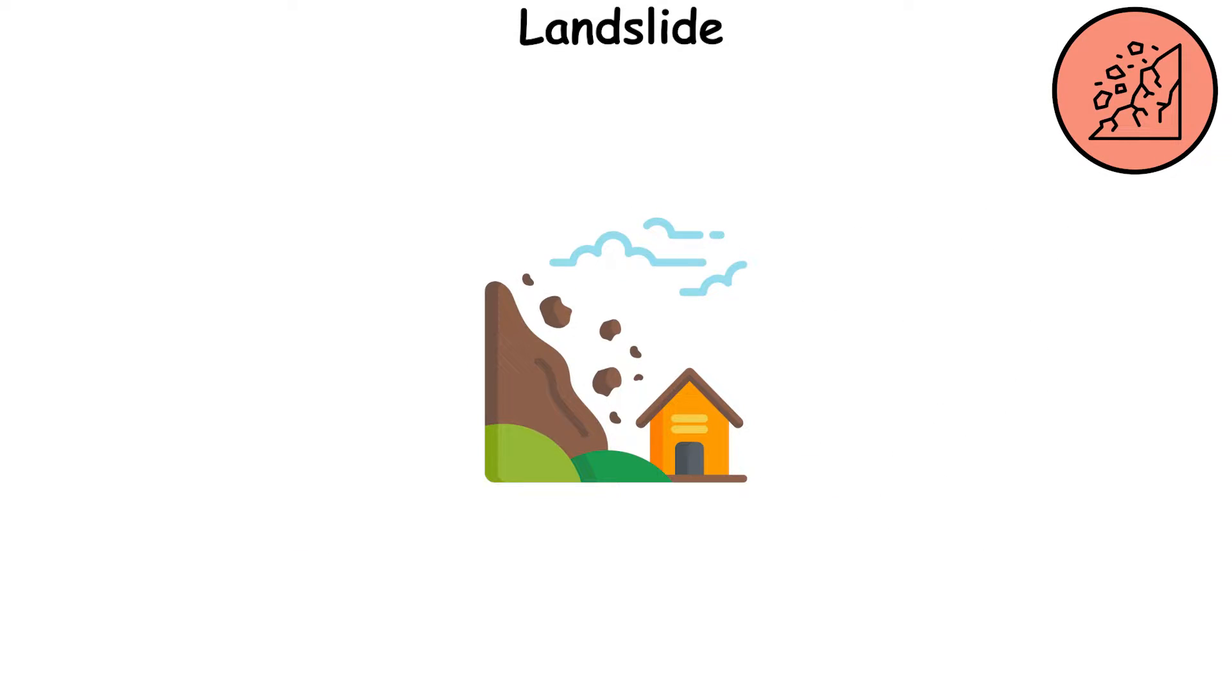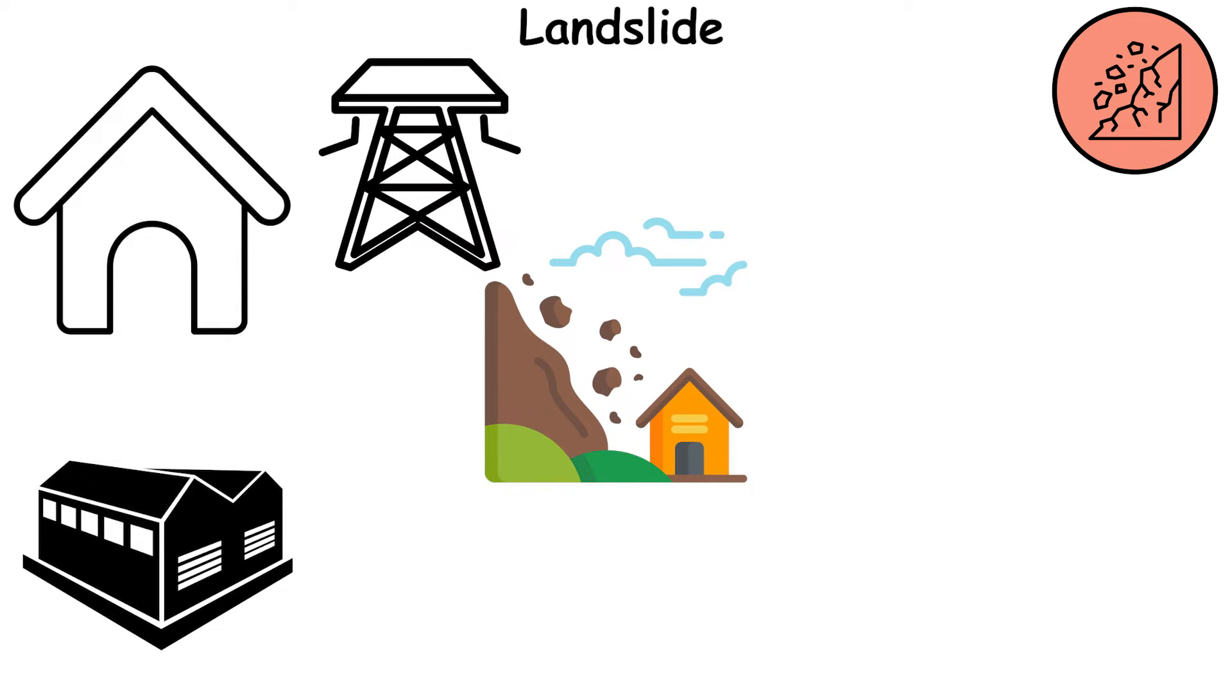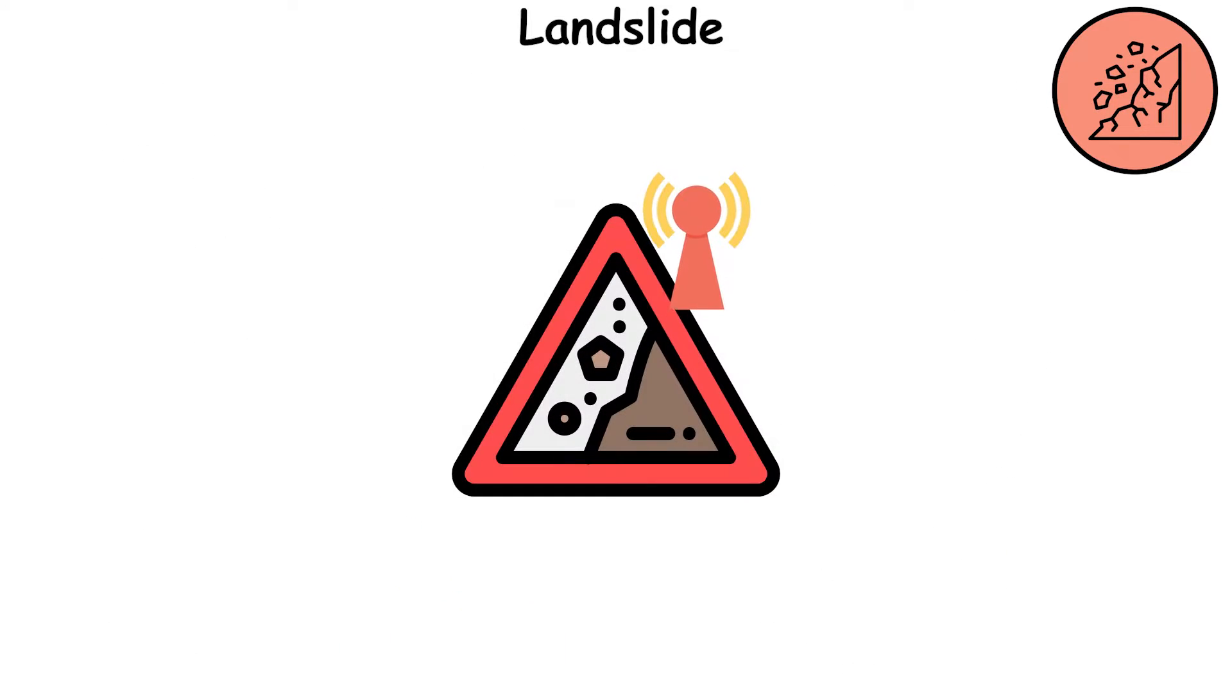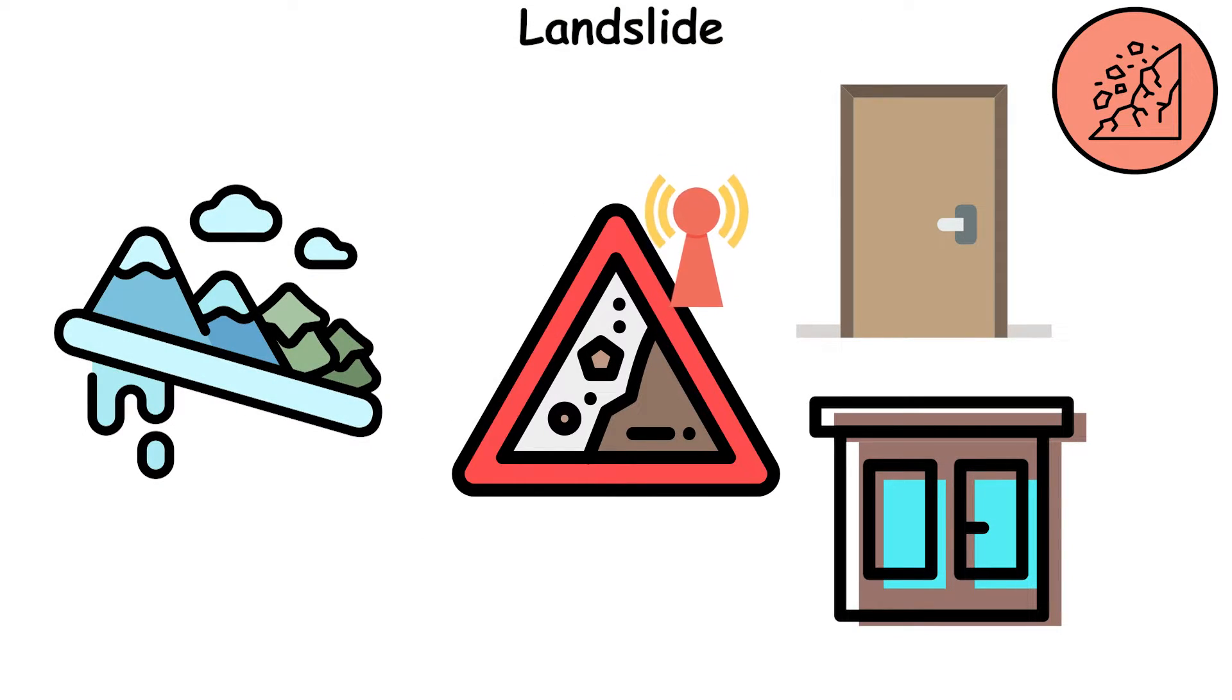Sliding masses of soil can cause destruction and rubble of residential and industrial buildings, engineering and road structures, main pipelines and power lines, as well as damage and loss of life. Signs of an impending landslide are jammed doors and windows, water seepage on landslide-prone slopes.